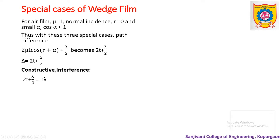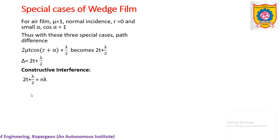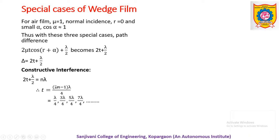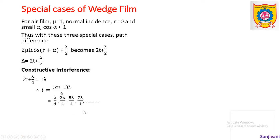For constructive interference: 2t + λ/2 = n·λ. Shifting λ/2 and rearranging gives the thickness of the film as t = (2n−1)λ/4. Putting in different values of n, we get thicknesses of λ/4, 3λ/4, 5λ/4, and so on.